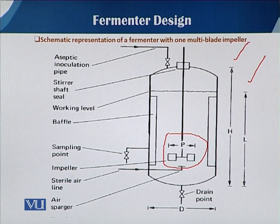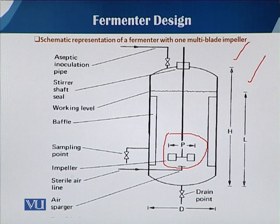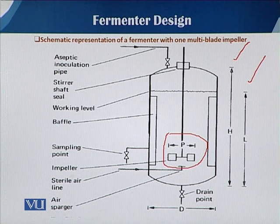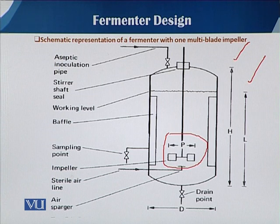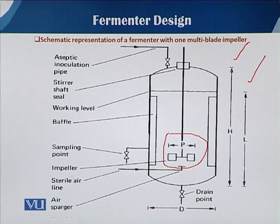You can see here a schematic representation of a fermenter with one impeller having multi-blades. Sometimes there is one impeller having three blades, four blades, or six blades — just like a ceiling fan having three blades or a pedestal fan having four blades. Similarly, in fermenters, impellers have different kinds of blades depending upon the type of impeller. In this slide you can see how a fermenter can have different dimensions and parts, including baffles.